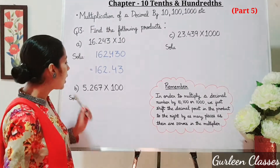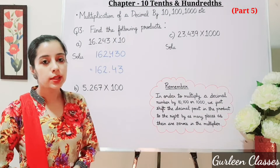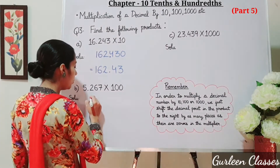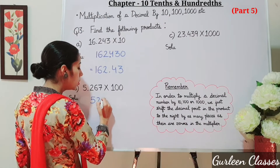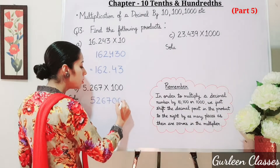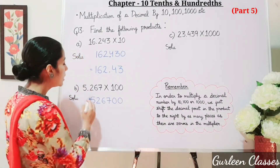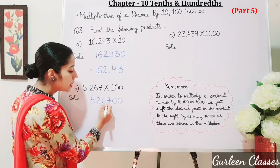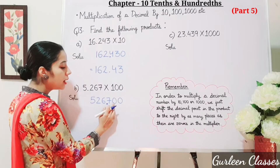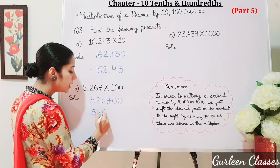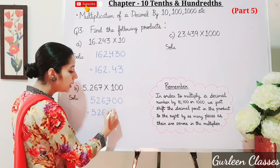Now part b: 5.267 into 100. So let us ignore the decimal point and multiply. It will be 5, 2, 6, 7, 0, 0. Now place the decimal point — after the decimal point there are 3 digits: 1, 2, 3. So the decimal point will come here. We can remove the trailing zeros. So the answer is 526.7.